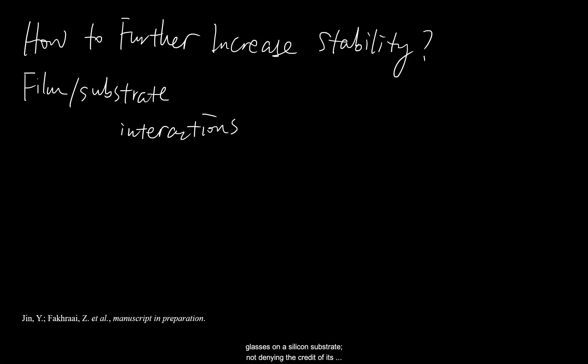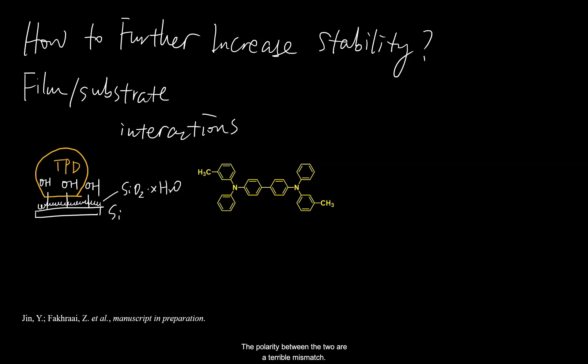We prepare molecular glasses on a silicon substrate. Not denying the credit of its excellent optical properties, it also isn't quite the best fit for organic molecules. The surface of silicon is a native silicon dioxide layer, with hydroxyl groups hanging outwards. And TPD is an organic compound. The polarity between the two are a terrible mismatch. Just so it doesn't get confusing, this sphere of TPD here is not a film, but a droplet of liquid TPD at high temperature. It can choose whether to spread out on the surface or to stay away from the surface by curling itself up.